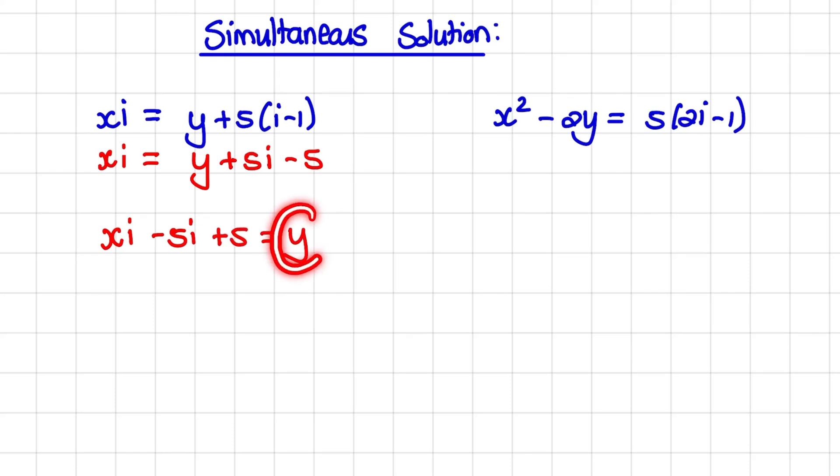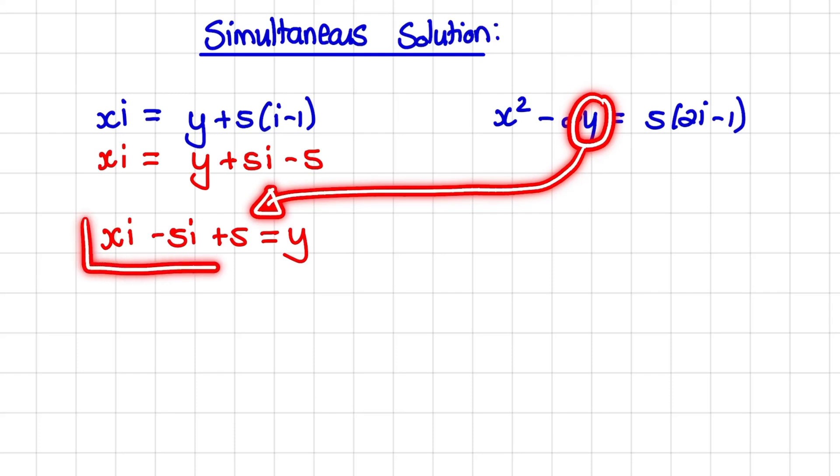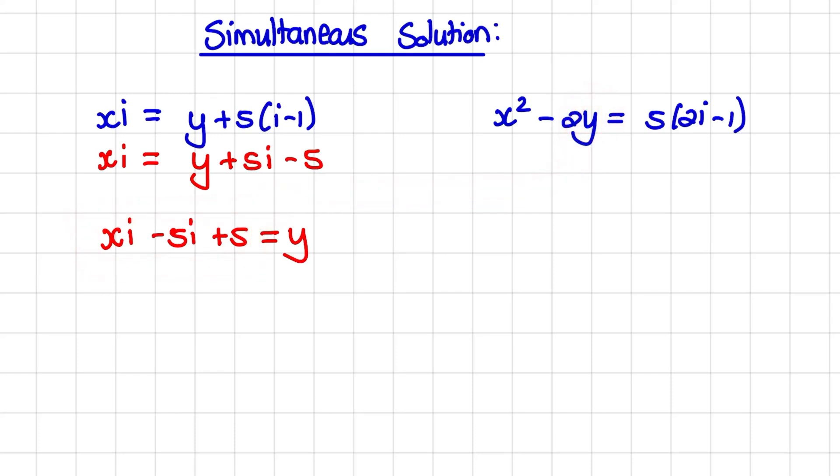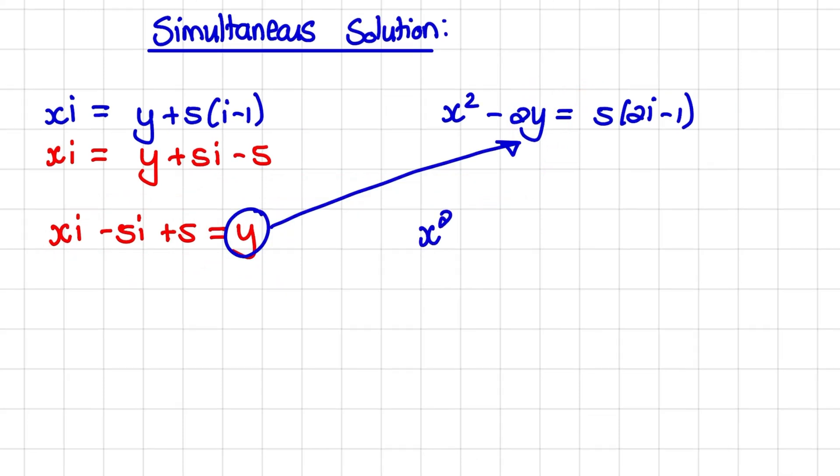Now what we can do is use this expression for y and substitute the y in our second equation with xi minus 5i plus 5. And when I do that, I have x squared minus 2 times xi minus 5i plus 5, closing that bracket, equals to 5 times 2i minus 1.